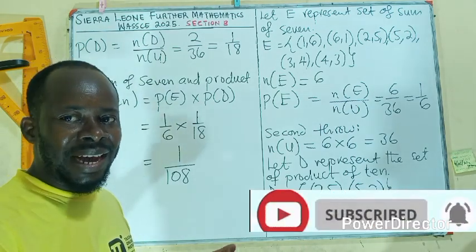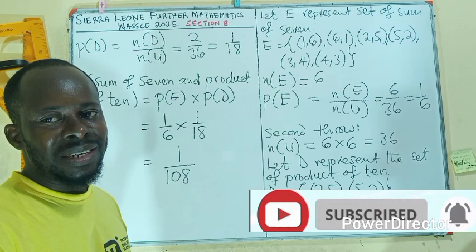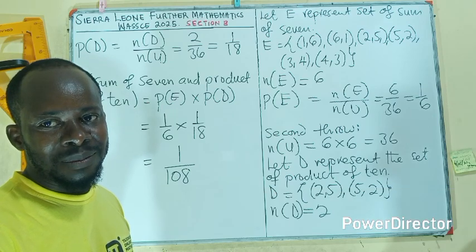So the probability as a compound probability AND will give you 1 over 108. Like, share, comment, and come back for question 6.